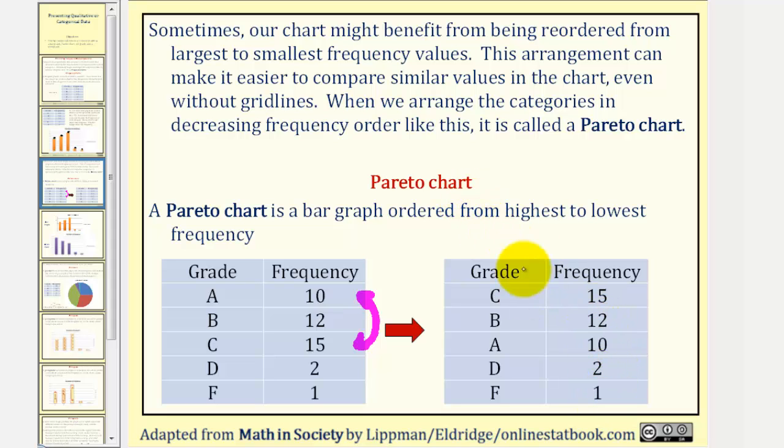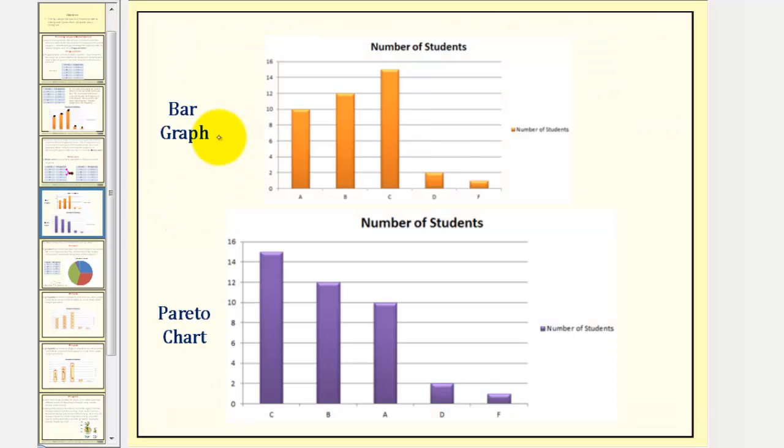Now, if we use this frequency table to make a bar graph, it'll be a Pareto chart. So the orange graph is a bar graph. This purple graph is a Pareto chart. Again, looking at the frequencies, notice how they go from largest to smallest.